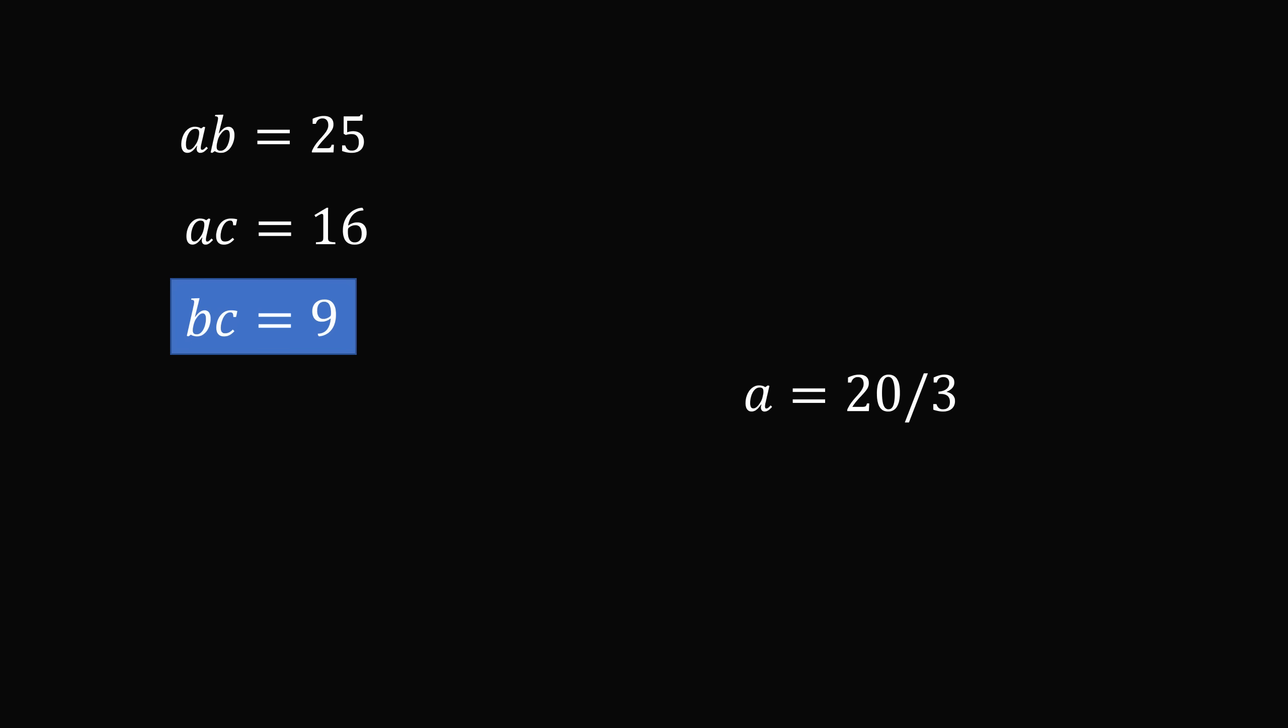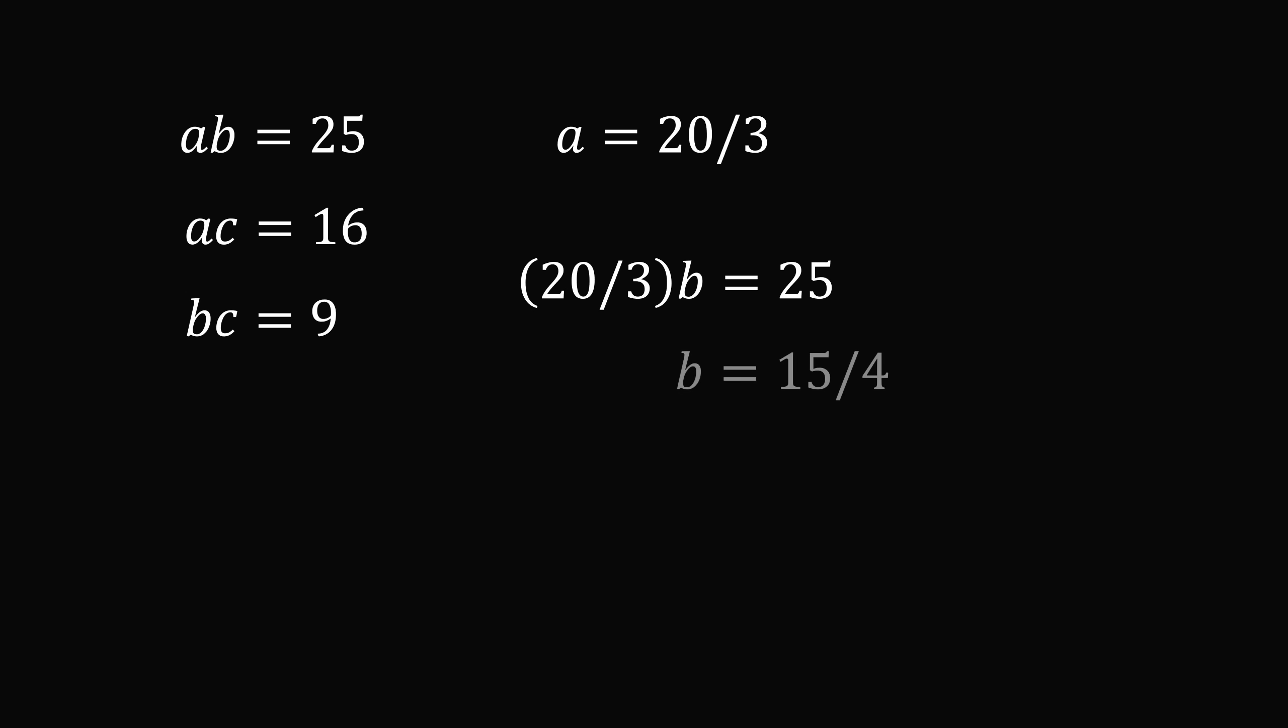Now that we've solved for a, we can substitute in, and we can solve for b and c. Substituting into the first equation gives 20 over 3 multiplied by b is equal to 25, which means b is equal to 15 over 4. Then, substituting into the second equation gives 20 over 3 multiplied by c is equal to 16, which means c is equal to 12 over 5.